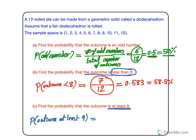At least 9 means it could be 9, 10, 11, or 12—any of these four values. So this is four numbers possible out of the 12 possible outcomes for the dodecahedron.